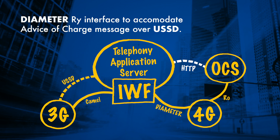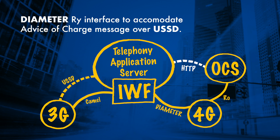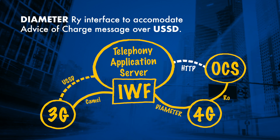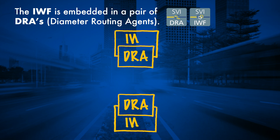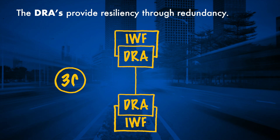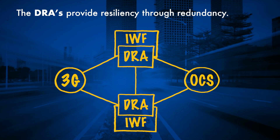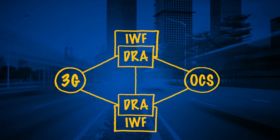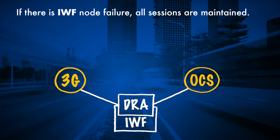They were also able to develop the Diameter RY interface to accommodate a proprietary Advice of Charge message sent over USSD. The interworking function is physically deployed and embedded in a pair of Diameter routing agents. The DRAs provide resiliency through redundancy, load sharing and balancing via sophisticated onboard routing. In the scenario where there is an IWF node failure, all ongoing sessions are maintained.